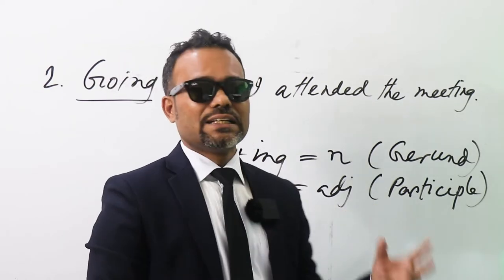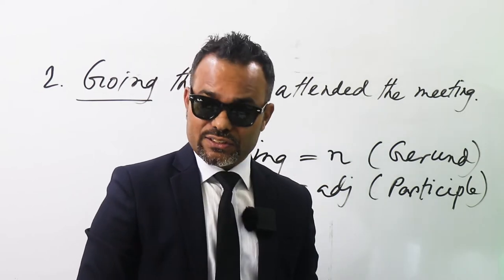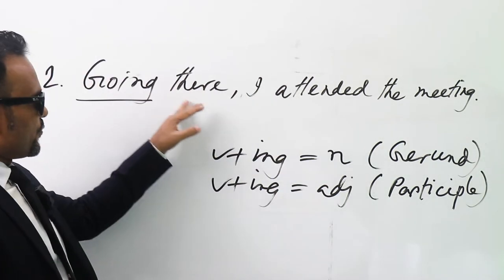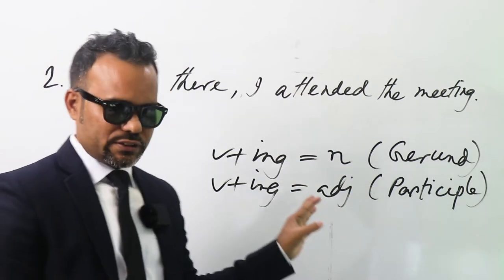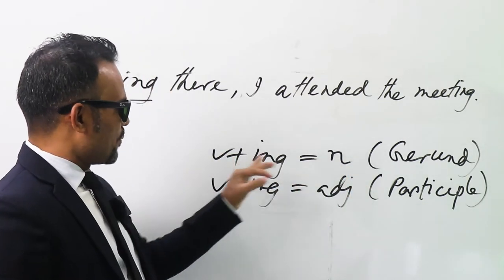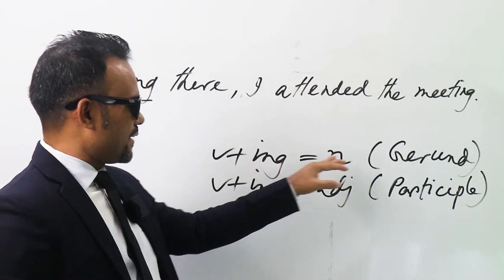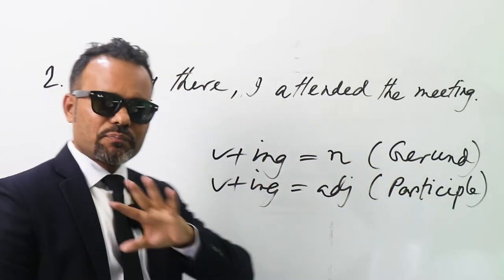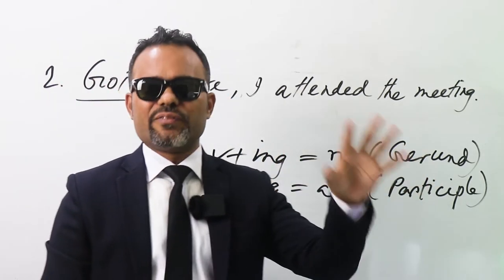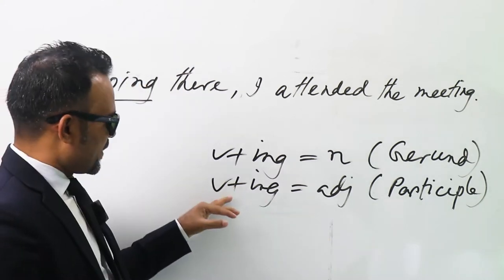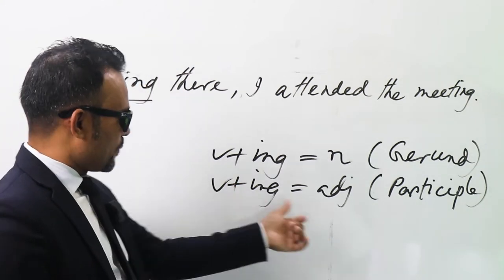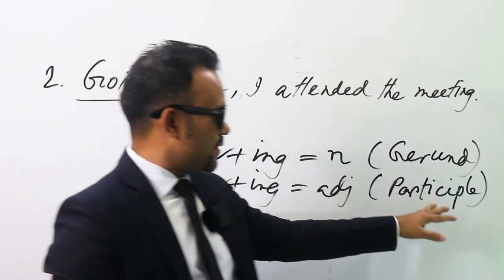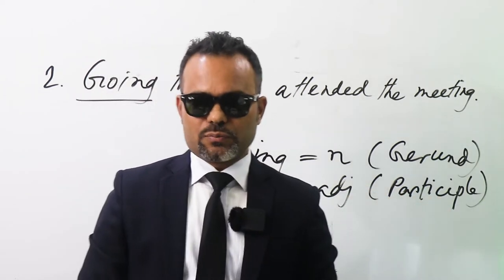Verb plus -ing, if it indicates an adjective — it could be a verb too. I'm coming to that. The first one: verb plus -ing, if it indicates a noun, then it will be a gerund. This is the primary thing everybody knows.